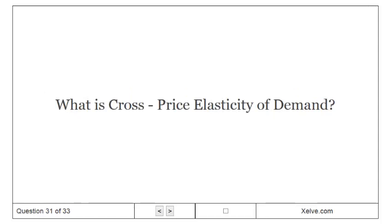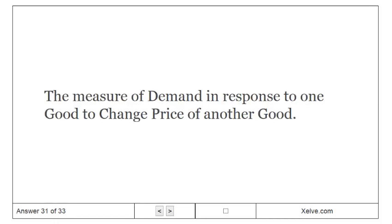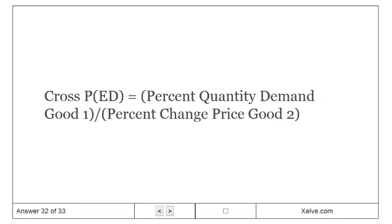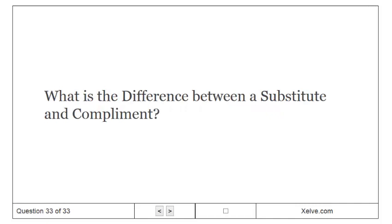What is cross price elasticity of demand? It is the measure of demand in response to one good given a change in the price of another good. Cross price elasticity is measured as cross-P equals the percentage change in quantity demanded of one good divided by the percentage change in price of another good. What is the difference between a substitute and a complement?